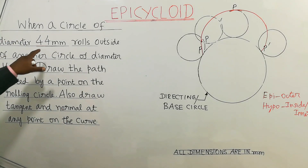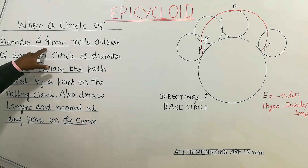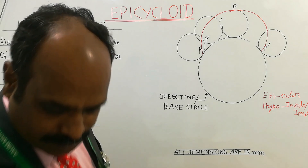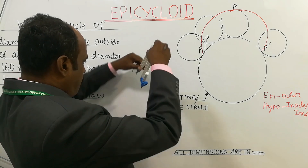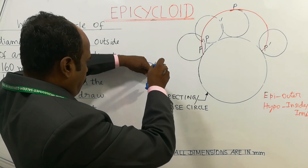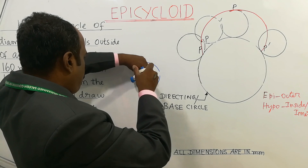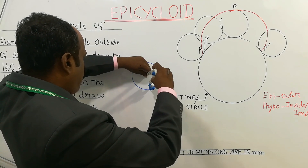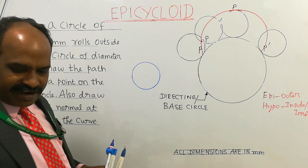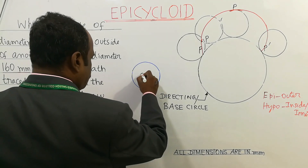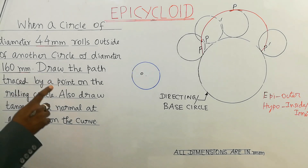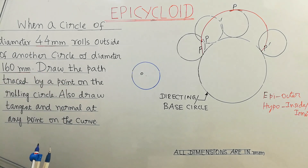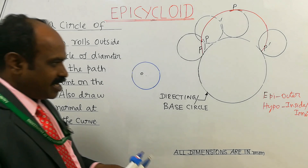For drawing this curve called epicycloid, we follow the procedure using drawing instruments. Take the rolling circle diameter given as 44 mm — the radius will be half of that, so 44 divided by 2 equals 22 mm. Take 22 mm into the compass. For the fixed circle, the diameter is given as 160 mm, so the radius is 160 divided by 2, which is 80 mm. Take that into the compass.